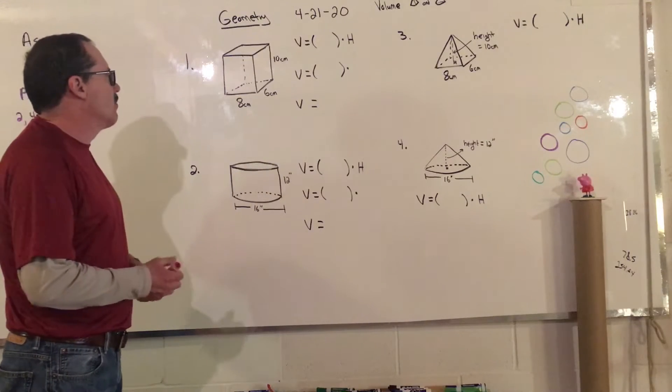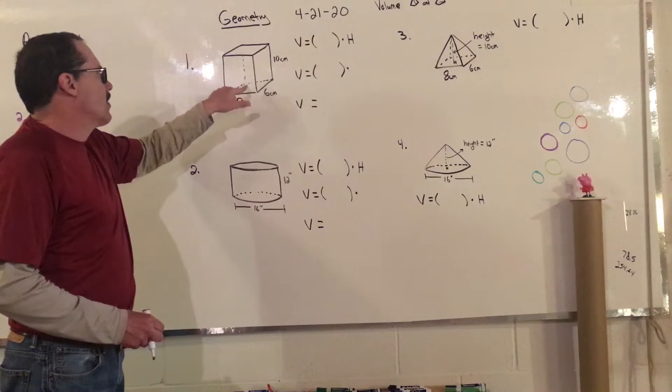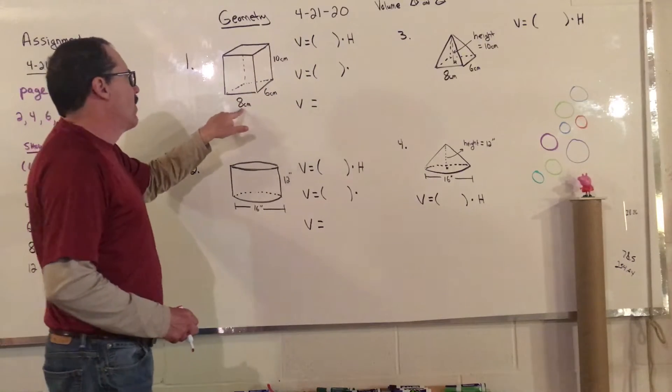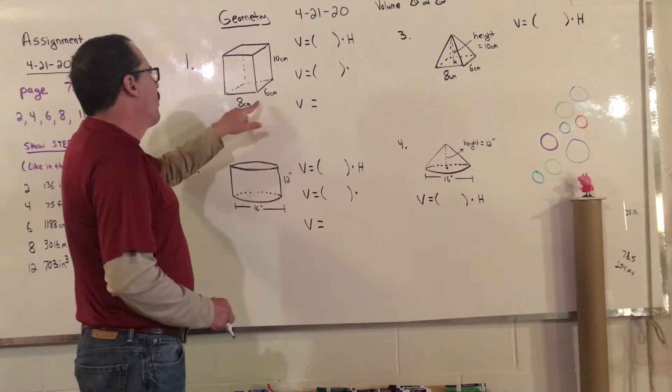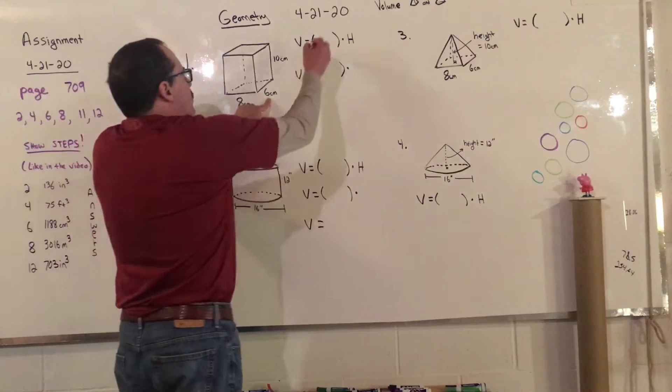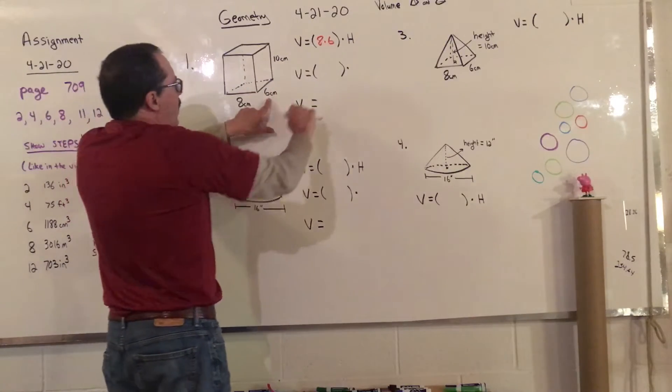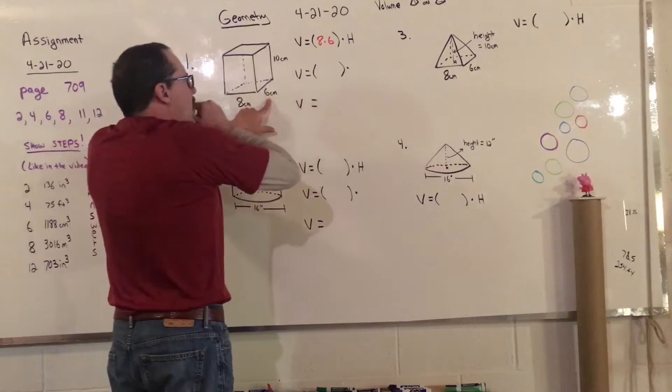We're going to look at a prism. Remember that volume is counting the number of cubes that can fit inside the box. So we always do area base first. So that would be 8 times 6 because the bottom is a rectangle, and then we're going to times it by the height, which is 10.